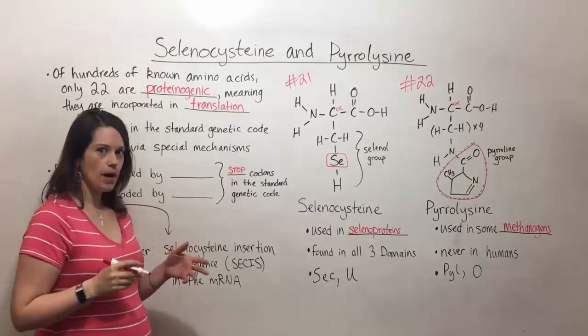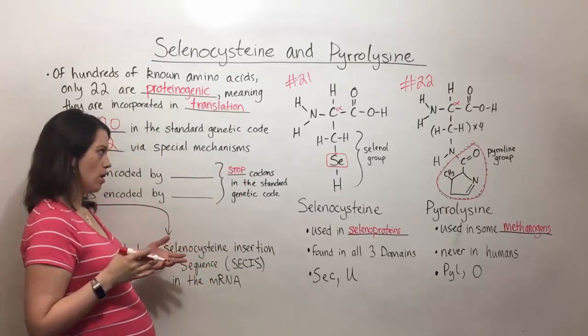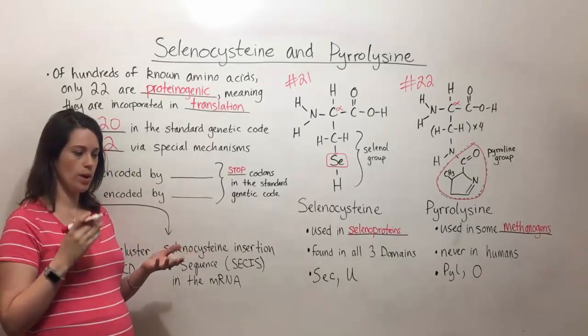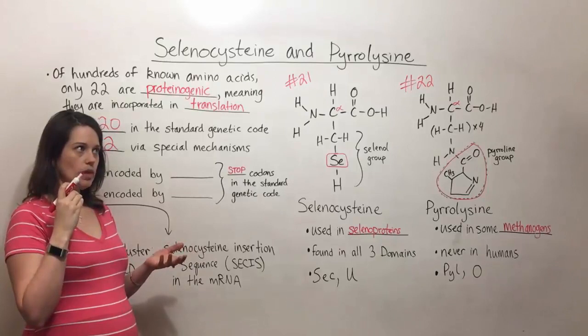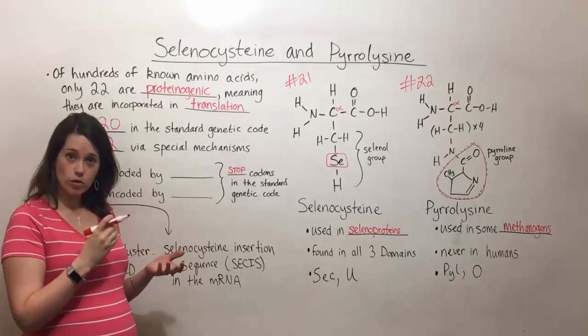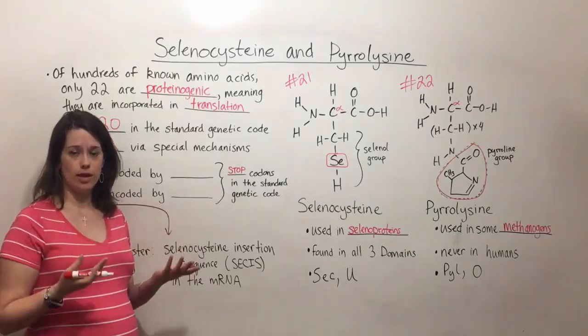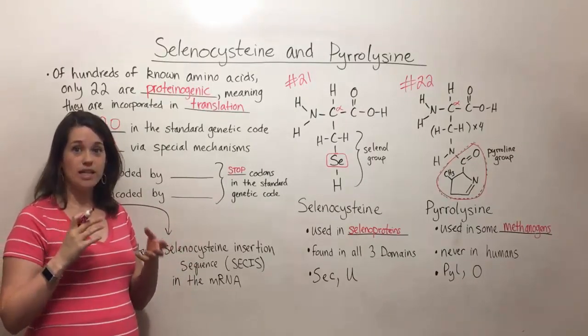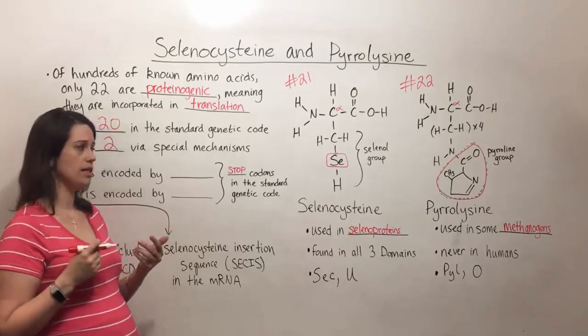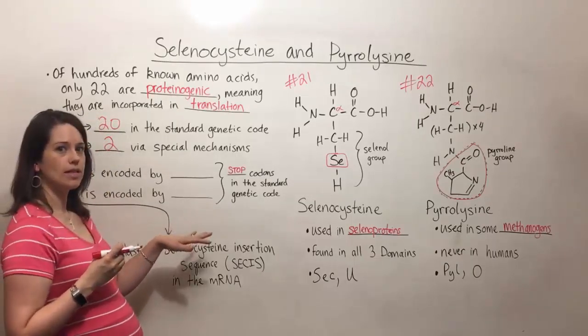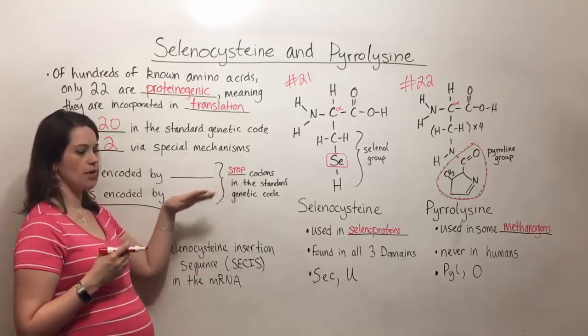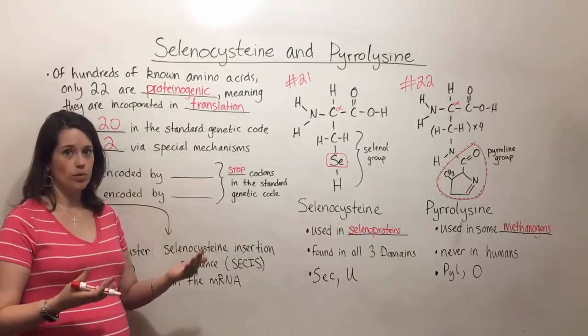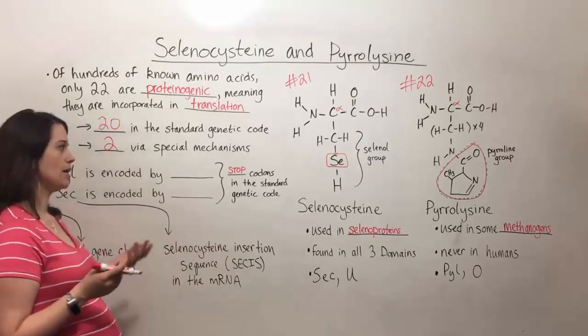So if you have studied biology for a while, you'll know that there are three different stop codons. And those are codons that when the ribosome gets to a stop codon during translation, it stops the translation process. Typically that means that the protein is complete and can be released. But in these special circumstances, there can be a stop codon that instead of being interpreted as a stop codon is interpreted as being for a pyrolysine or a selenocysteine instead.